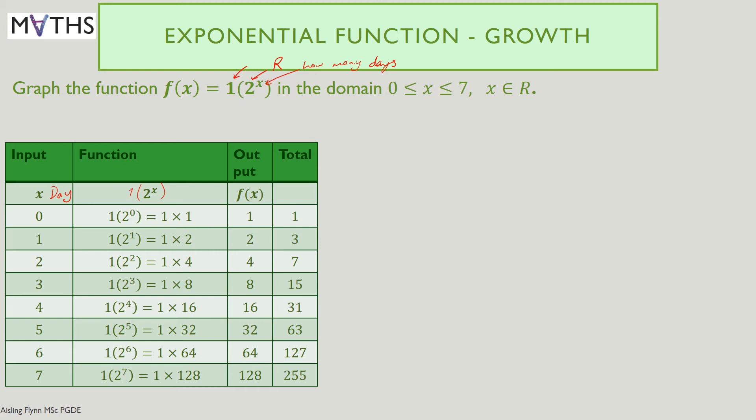Now, the first thing we have to note on day 0, it's 1 times 2 to the power of 0. Anything to the power of 0 is value 1. You'll do that when you study indices. Anything to the power of 0 is 1, x to the power of 0 is 1. On day 0, we had one person. That's our output. I've also included a column for the total, adding the next day's cases and so on, accumulating the numbers there.